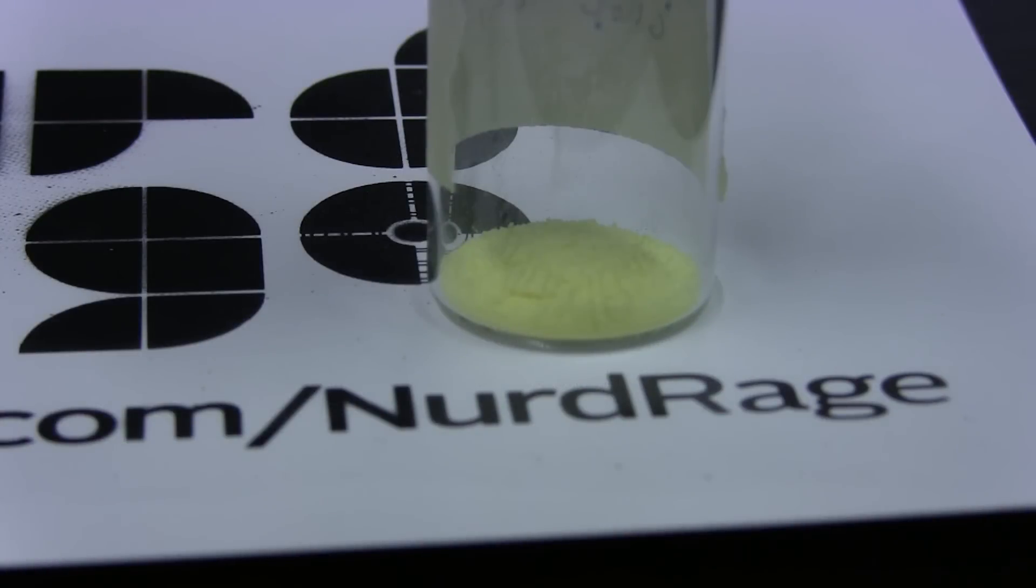Now just because the light is higher energy doesn't mean this will always work. This is a sample of europium tetrakis dibenzoylmethide triethyl ammonium. Under violet light it will glow a bright orange color.